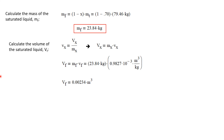Now let's calculate the volume of the saturated liquid. Again using the definition of specific volume — volume divided by mass — rearranging, volume equals mass times specific volume. Using subscript F for the saturated liquid, the volume of the saturated liquid is the mass of the saturated liquid times the specific volume of the saturated liquid. With all values known, we calculate that the volume of the saturated liquid in the tank is 0.00234 cubic meters.